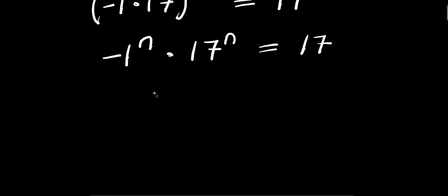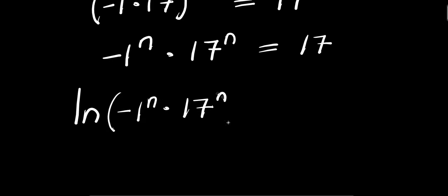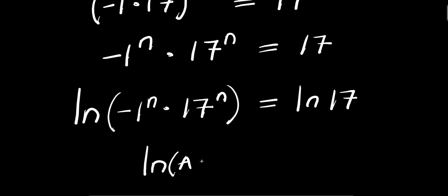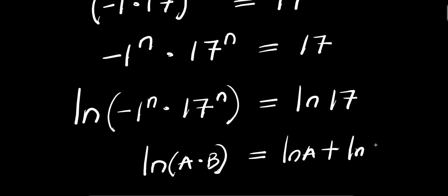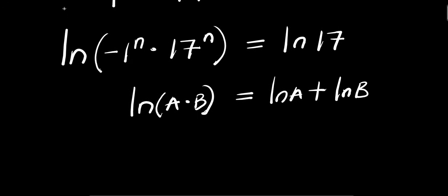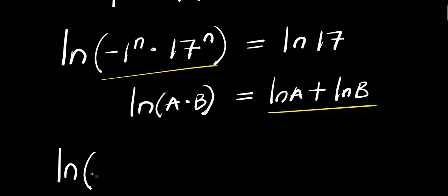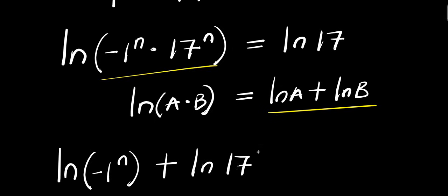So right now, what we are going to do will be to apply natural log. I have natural log of negative 1 to the power of n times 17 to the power of n equals natural log of 17. And if you have natural log of a times b, this equals natural log a plus natural log b.